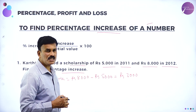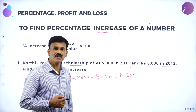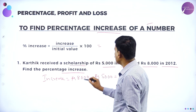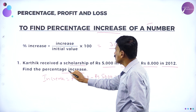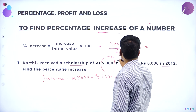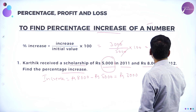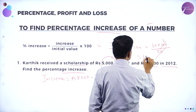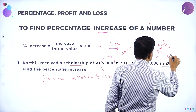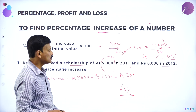This is the increase — 3,000 rupees is the increase from 2011 to 2012. Now, to find the percentage increase: percentage increase is equal to increase, which is 3,000 rupees, divided by the initial amount of 5,000, into 100. The two zeros get cancelled, giving 30 into 100 divided by 50, which is 30 into 2, equal to 60. So the percentage increase is equal to 60 percent.